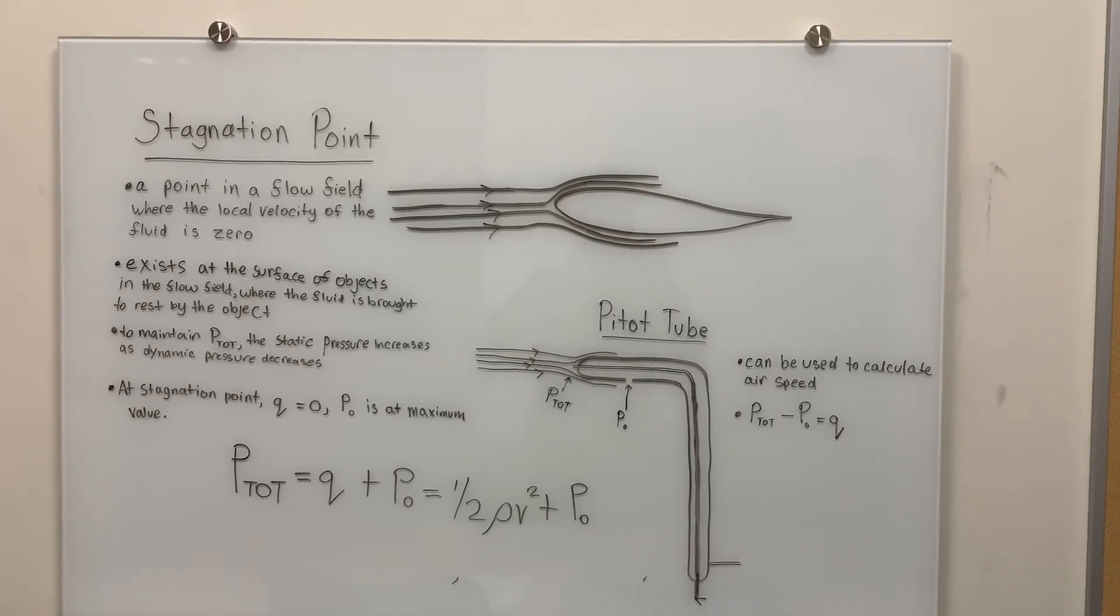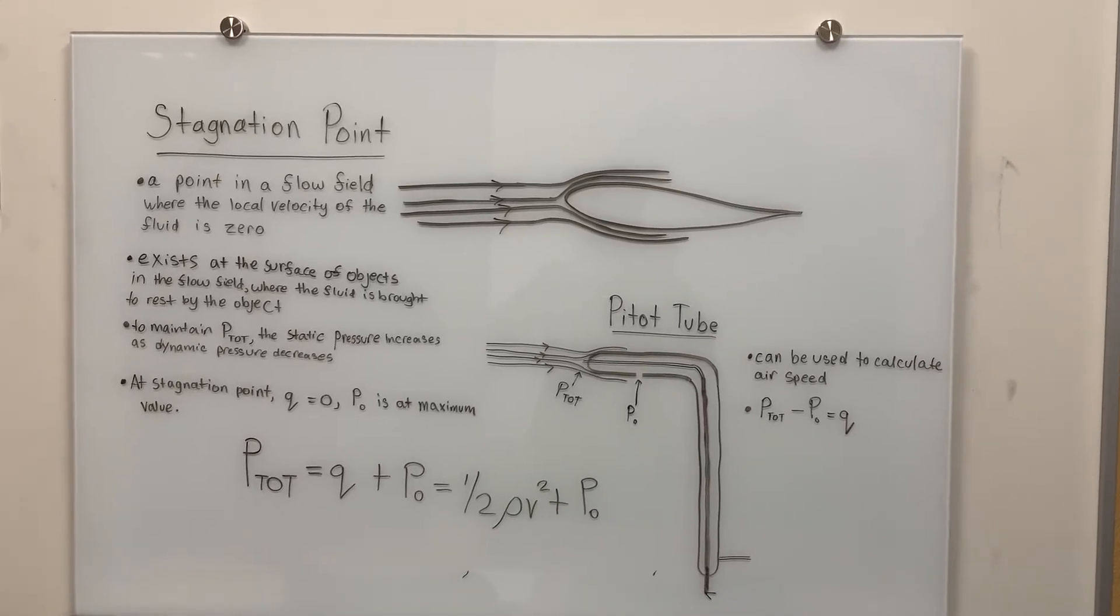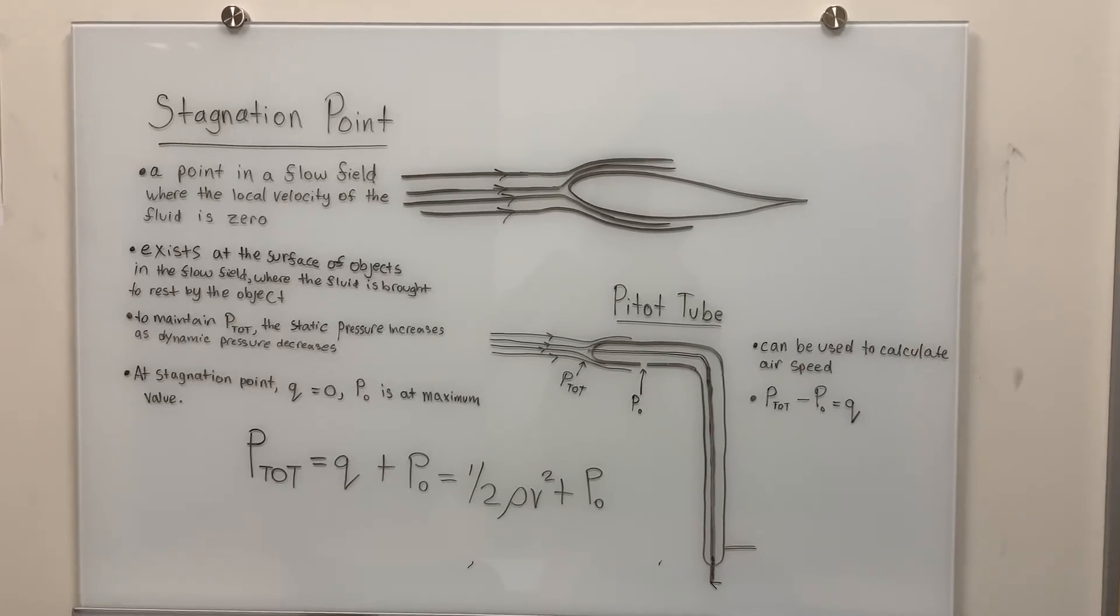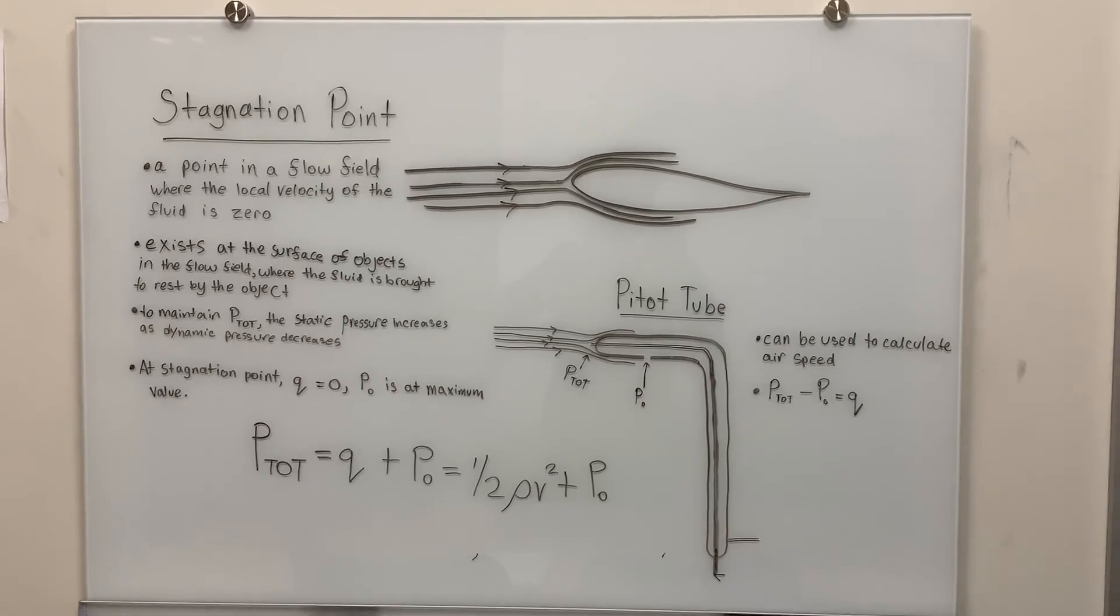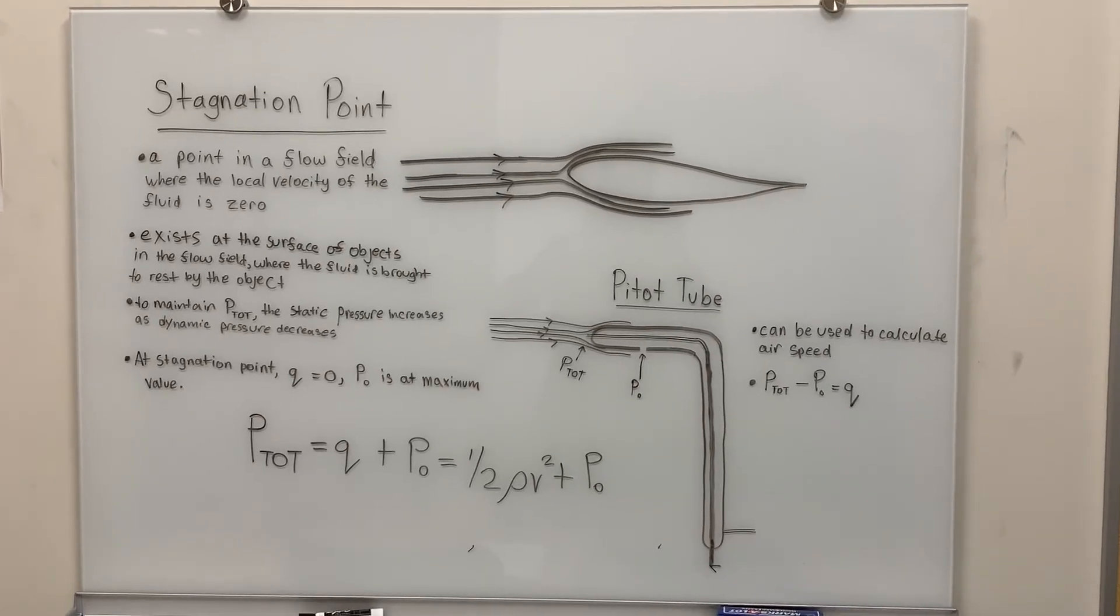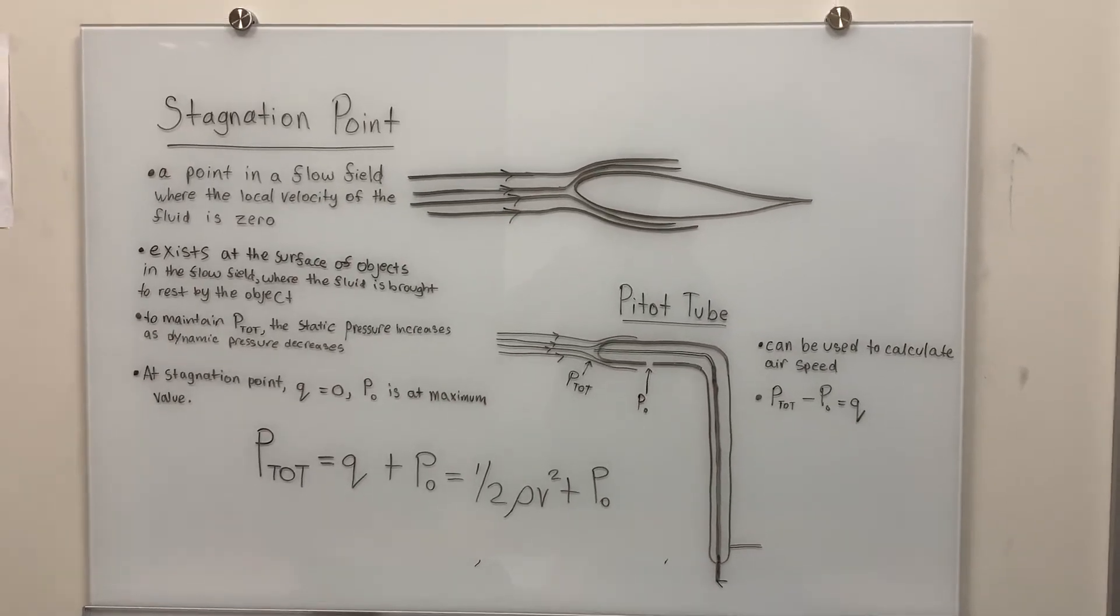As you place the pitot tube into the incoming air flow, the air comes into contact with the pitot tube and is forced to change its direction. As the air is forced to change its direction, the velocity at the center of the pitot tube is zero.